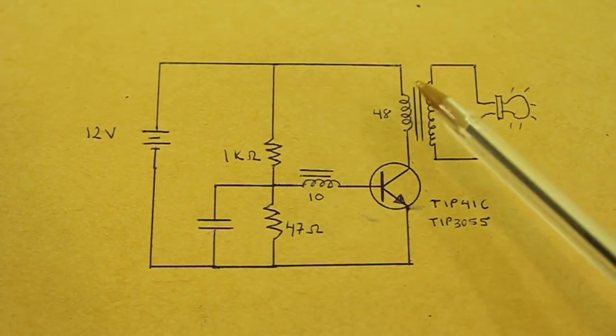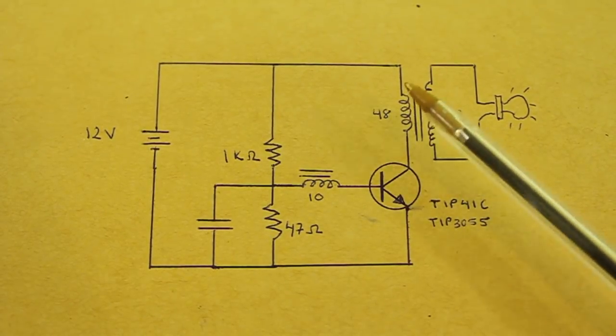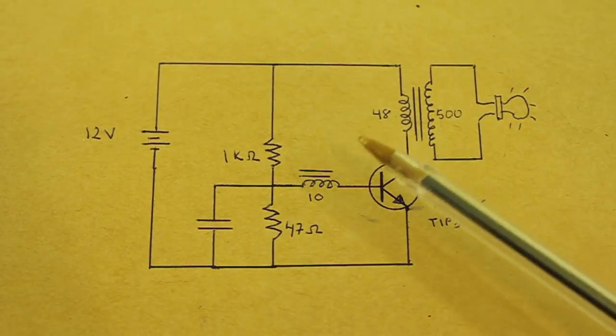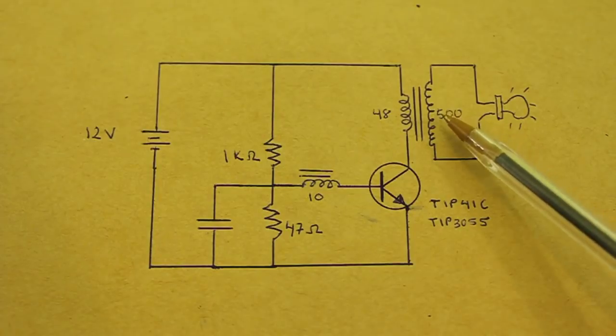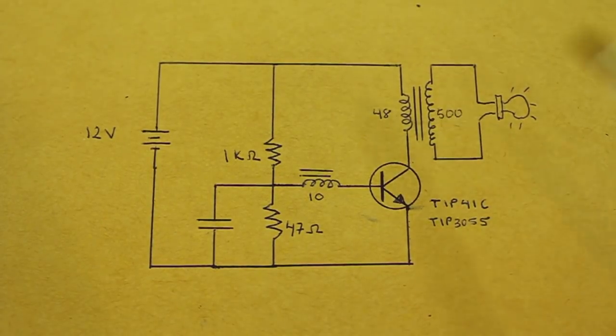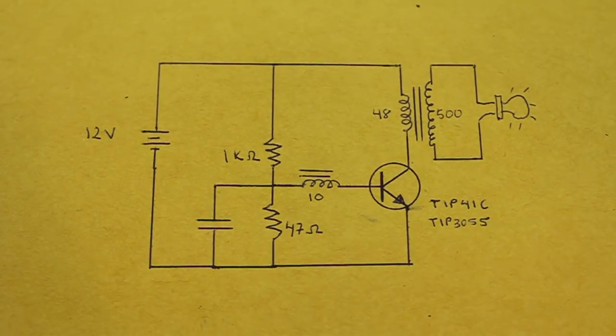We have a varying magnetic field in the transformer and this induces a much higher voltage on the 500 turn secondary which is used to turn on the fluorescent lamp.